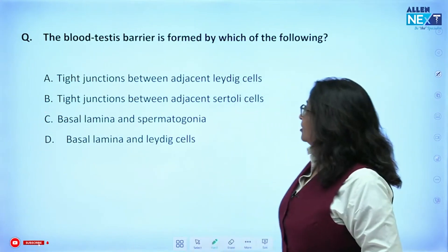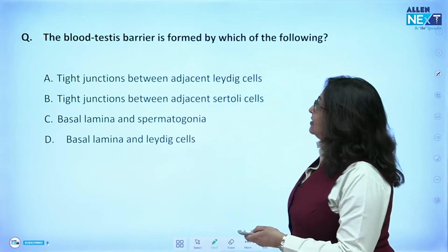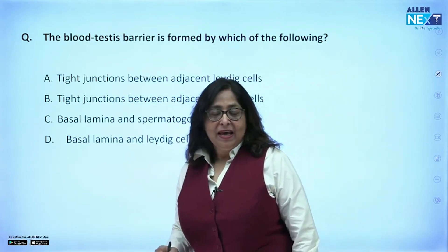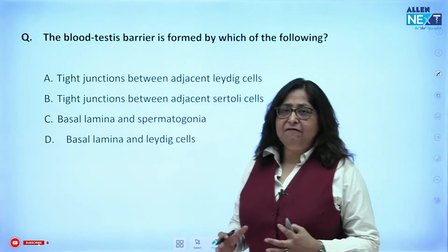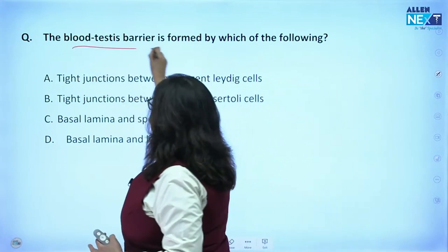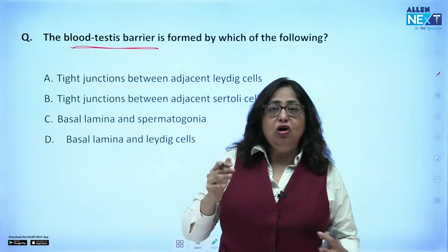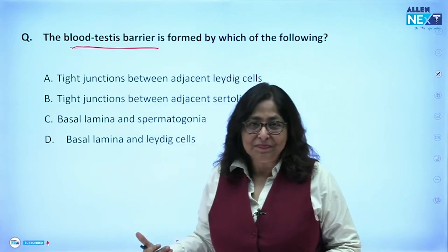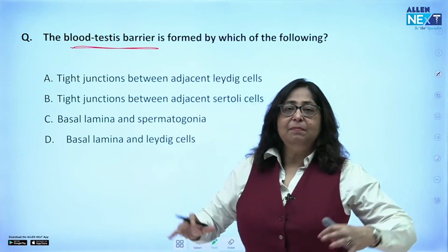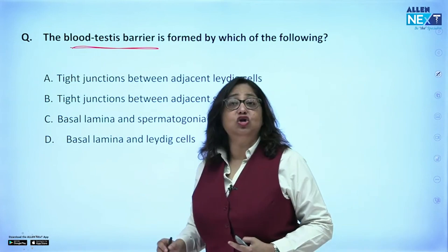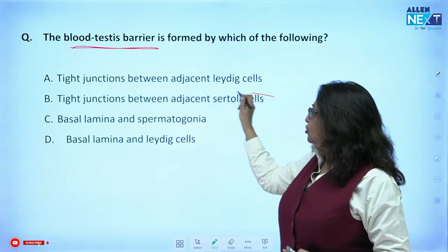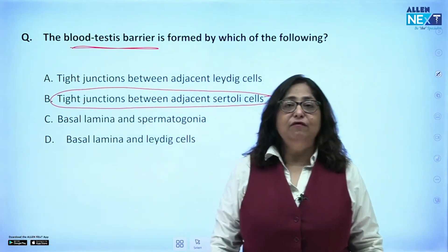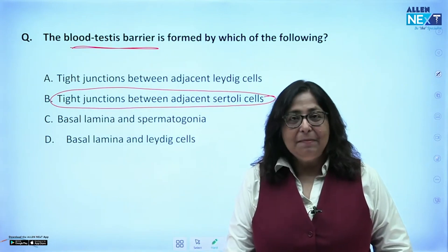Let's go on to the next one: the blood-testes barrier. The blood-testes barrier is formed by which of the following? Please remember, the blood-testes barrier does not allow substances from the blood to affect the developing sperms in the testes. The blood-testes barrier is formed by the Sertoli cells, and tight junctions between adjacent Sertoli cells are responsible for what is known as the blood-testes barrier.